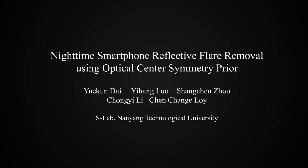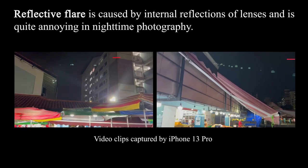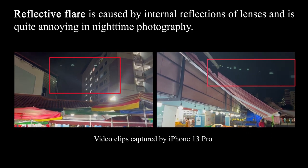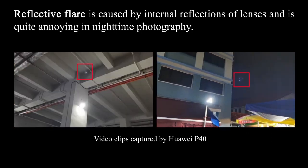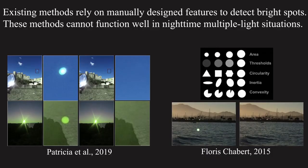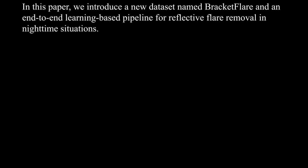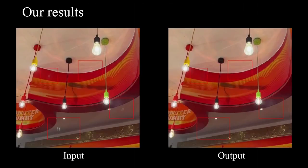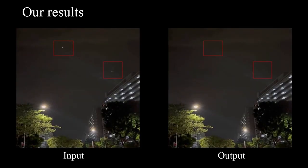Lens flare is a phenomenon that occurs when light reflects inside lenses, causing bright spots or a ghosting effect in photos. Existing reflective flare removal methods rely on manually designed features to detect these flares of the sun, which are always round bright spots. However, these methods often fail to identify reflective flares created by various types of artificial light sources in nighttime situations. We introduce a new dataset named Brachet Flare and an end-to-end learning-based pipeline for reflective flare removal in nighttime situations.